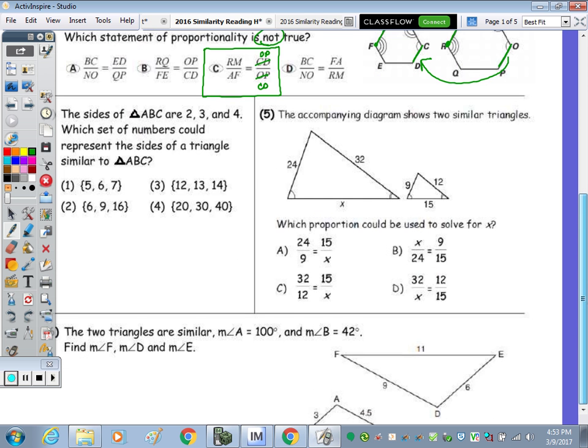Number four, the sides of the triangle are given. Which could represent the sides of the triangle? So they need to be all multiplied by the same number so that they have the same scale factor. So that would be answer choice four, because 2 times 10 is 20, 3 times 10 is 30, and 4 times 10 is 40. They all have the same scale factor.